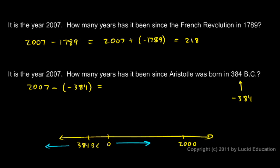And when I rewrite that as an addition problem, it becomes pretty simple. 2007 plus 384. And those are two numbers I can simply add up. 2007 plus 384 comes out to 2391.